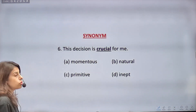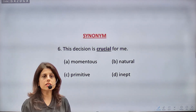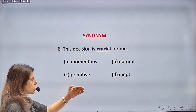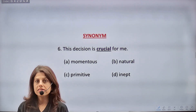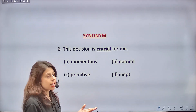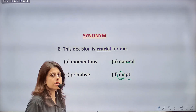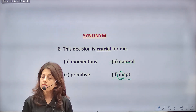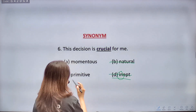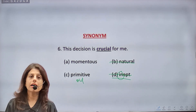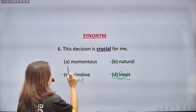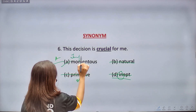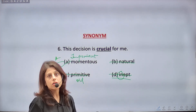Next: 'This decision is crucial.' Mark the SYNONYM. Crucial means serious and very important. Options: momentous, natural, primitive, inept. Natural — no relation to importance, eliminate. Inept — 'in' root makes it negative, means not skillful, eliminate. Primitive means old/ancient/pracheen — not related, eliminate. Momentous means anything which is very significant and carries a lot of importance. Correct answer: MOMENTOUS.